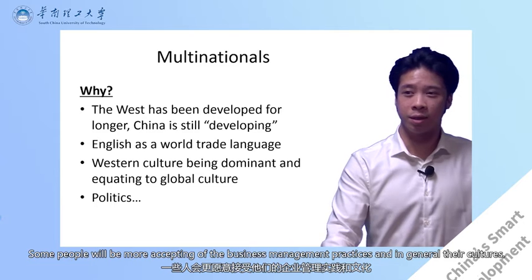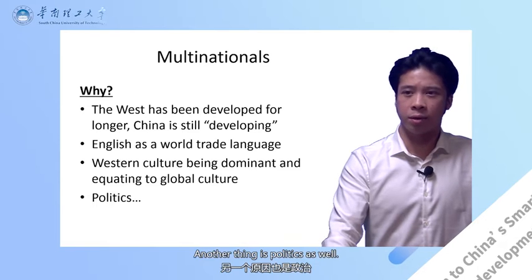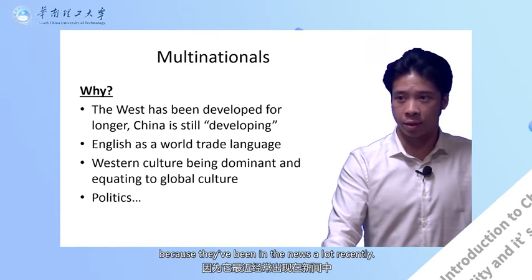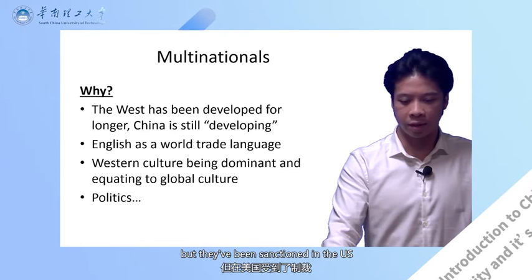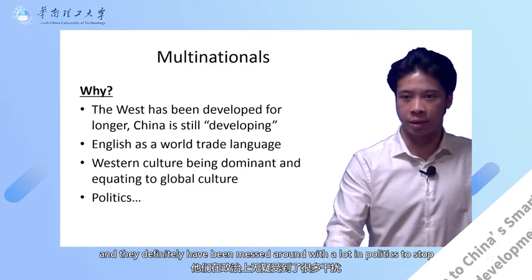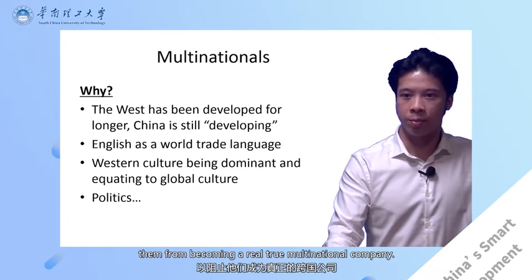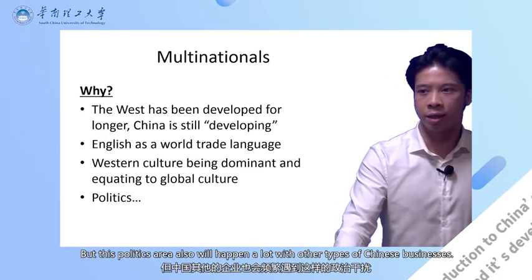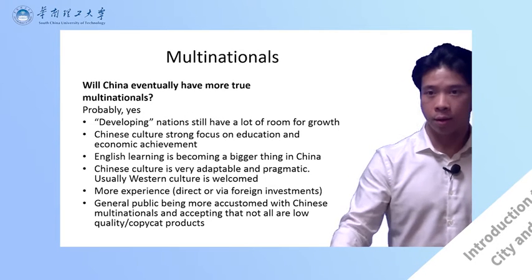Another factor is politics. Taking Huawei as a very good example — they've been very successful selling products all over the world, but they've been sanctioned in the US, and politics has been used to stop their growth and stop them from becoming a true multinational company. Though it's debatable, Huawei is still a very successful company, but this politics area will happen a lot with other types of Chinese businesses.